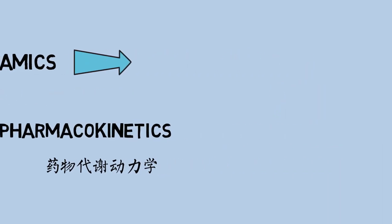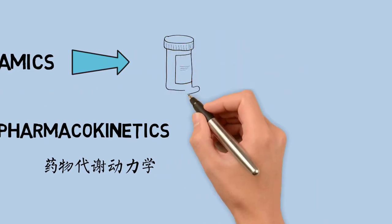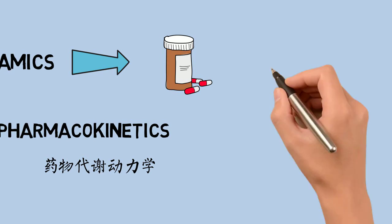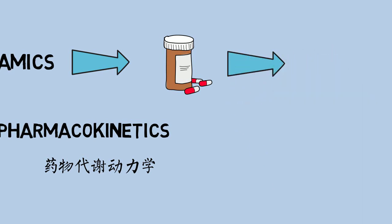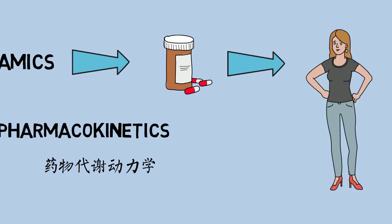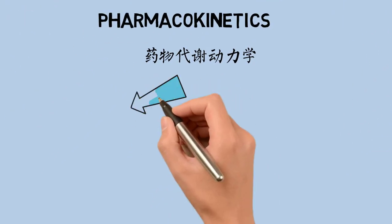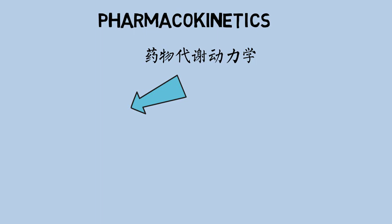In broad terms, pharmacodynamics discusses the chemicals with biological receptors, and pharmacokinetics discusses the absorption, distribution, metabolism, and excretion (ADME) of chemicals from the biological systems.